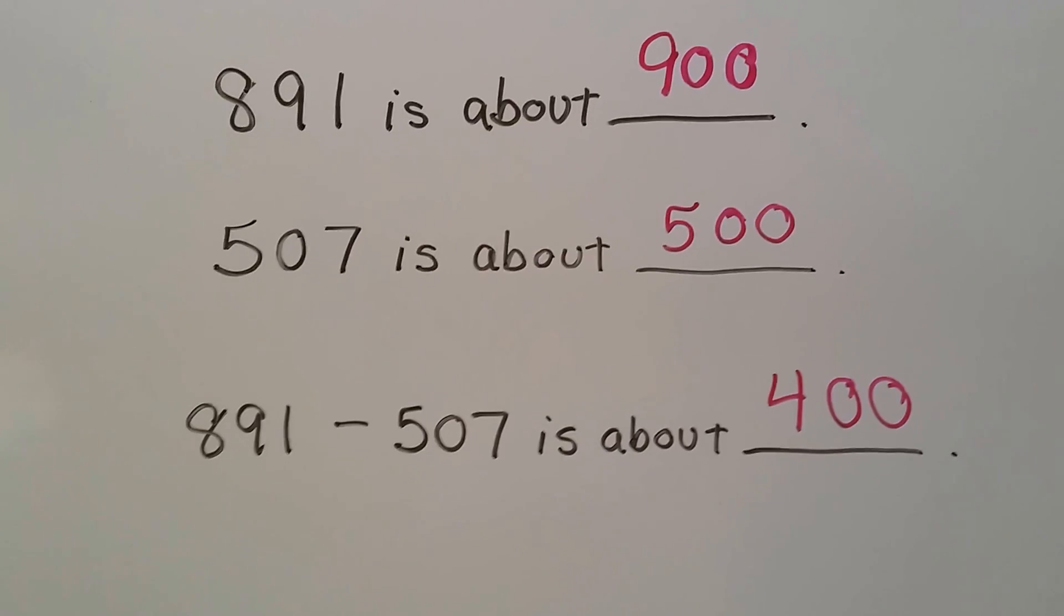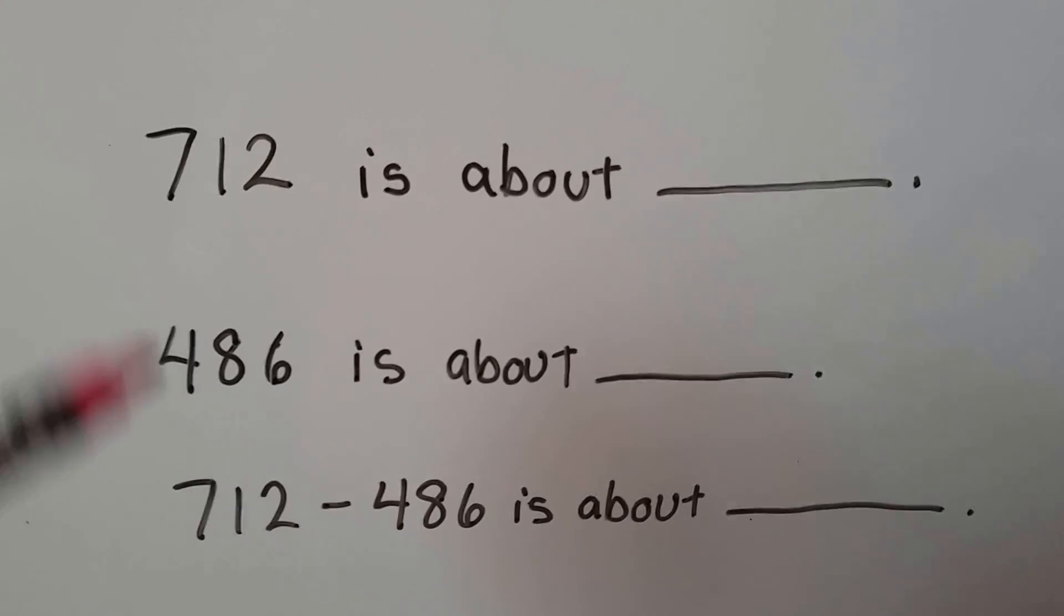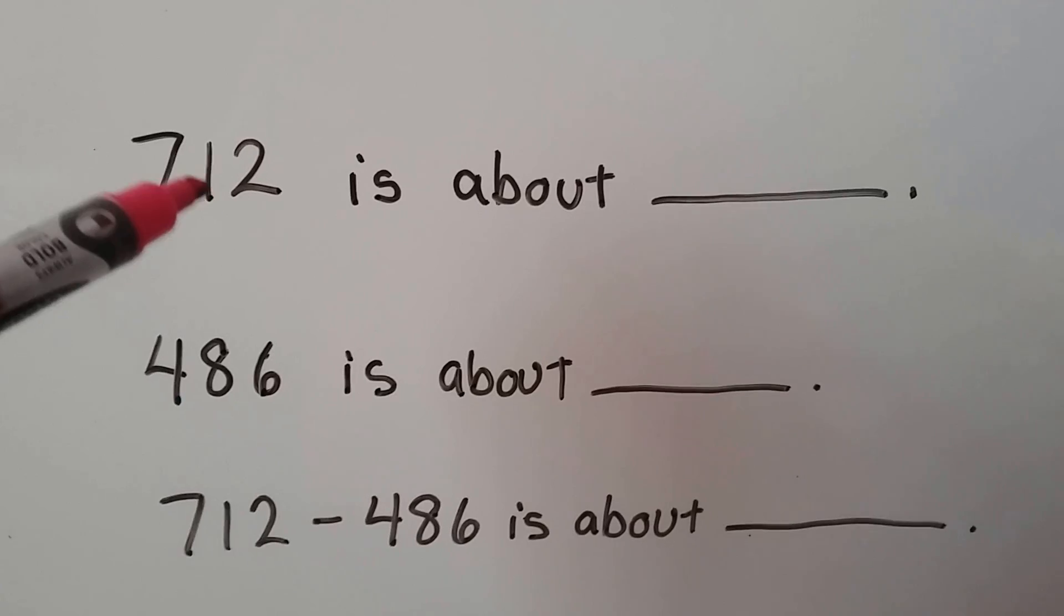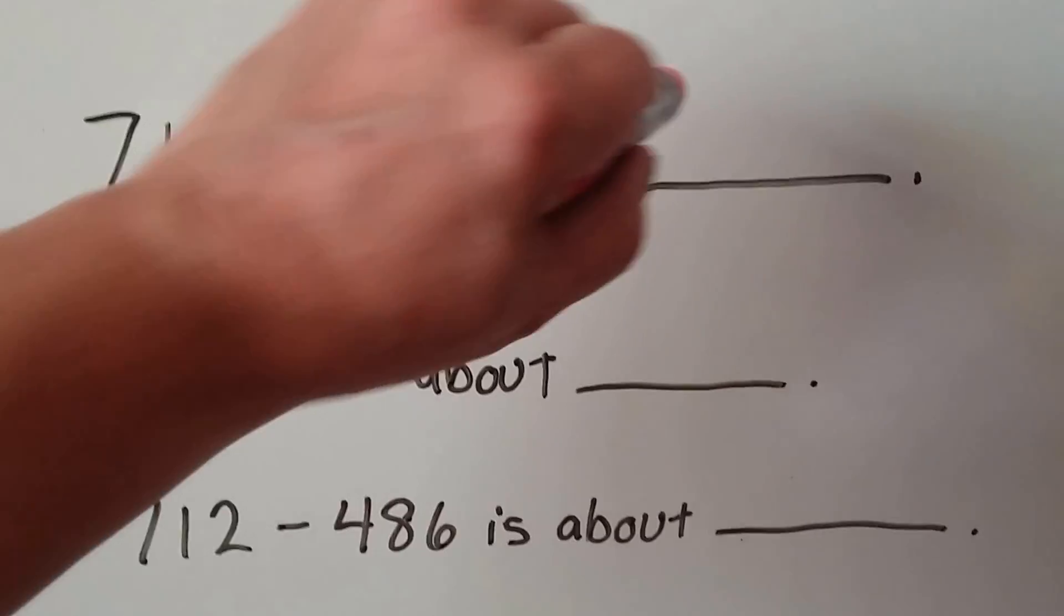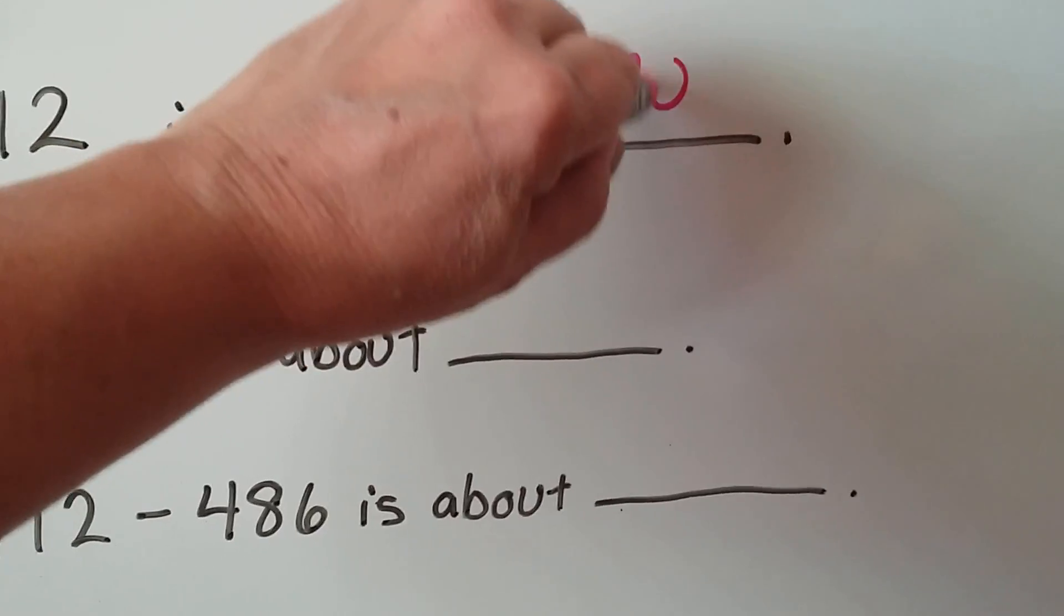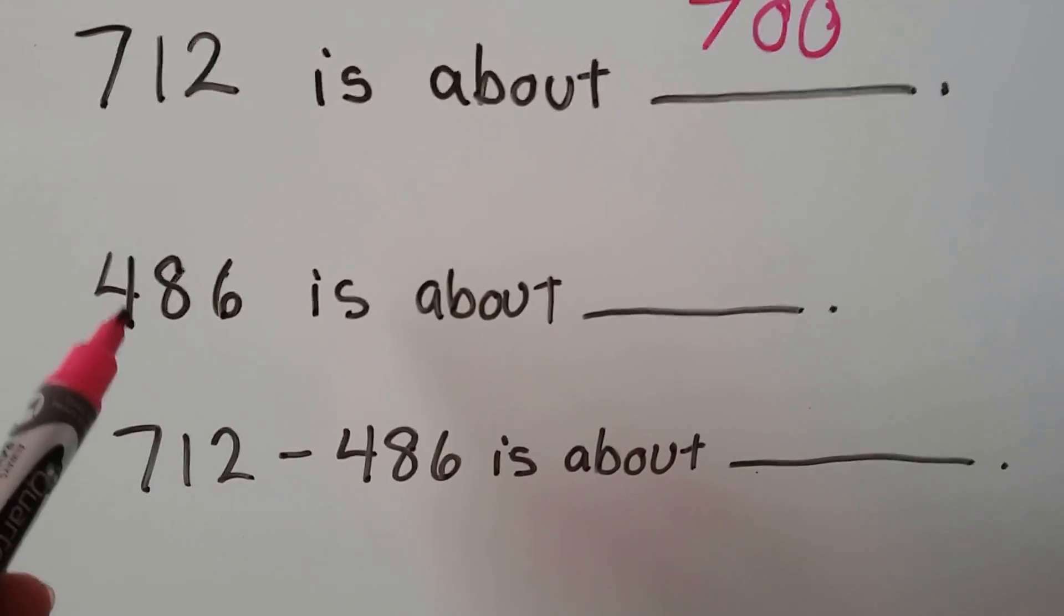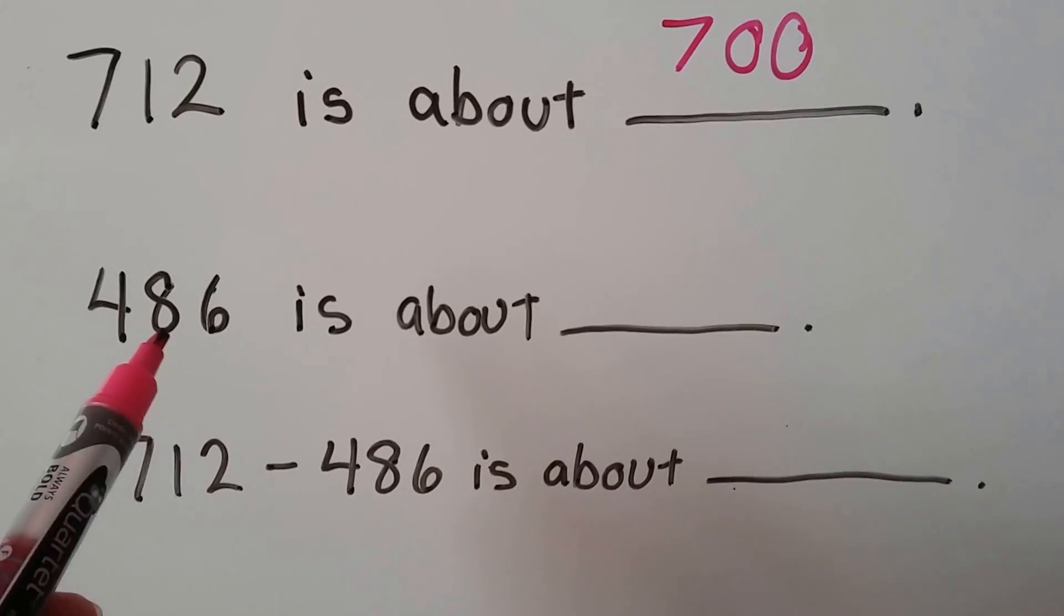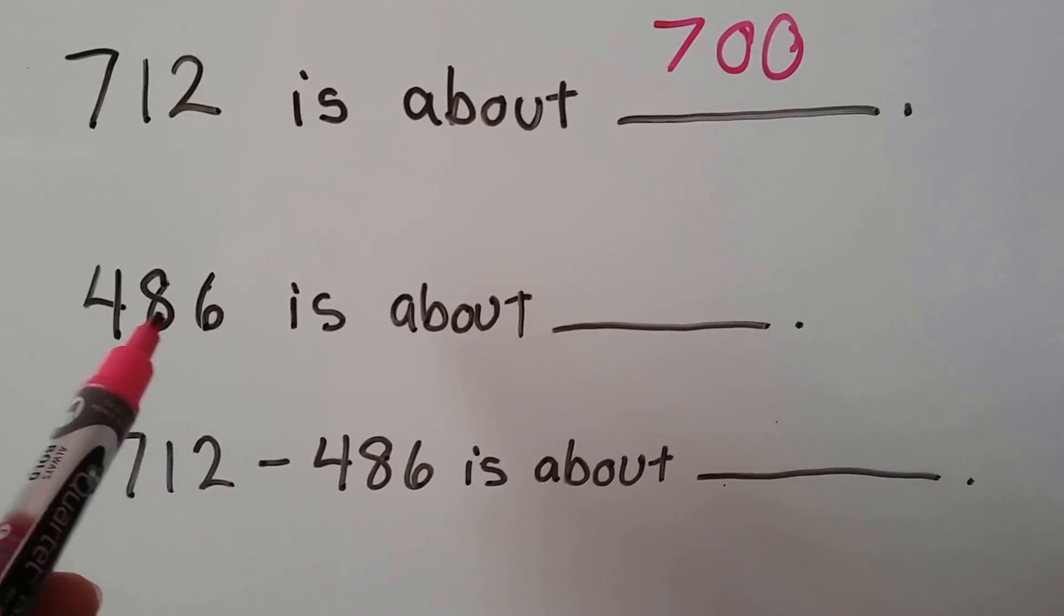Let's try this one. We have 712. Now is that closer to 700 or 800? Well, 12 isn't that many when we're talking about hundreds, right? So this is closer to 700. 486, is that closer to 400 or 500? Well this 86 is pretty big, that's almost another hundred, so this is closer to 500.